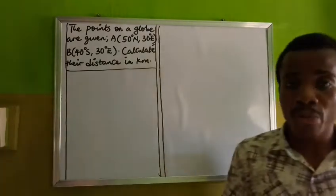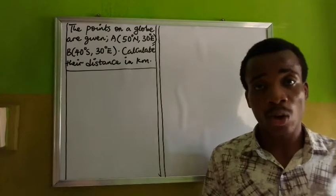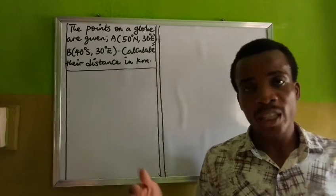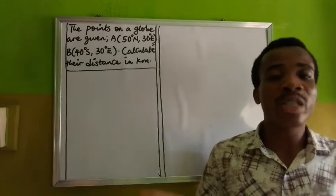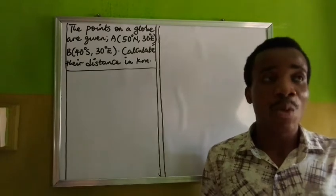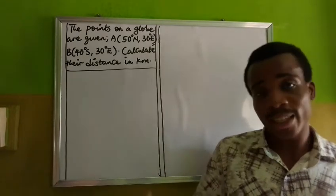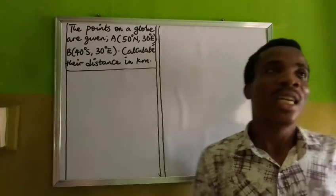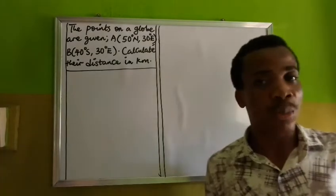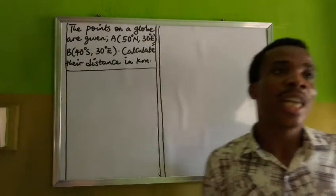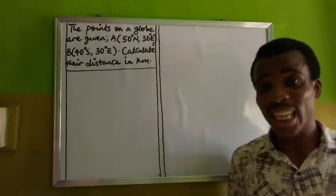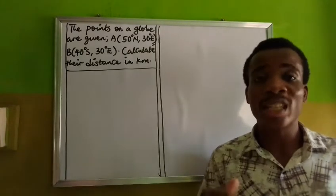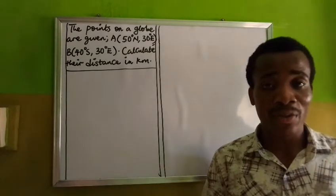There is a way we figure that out by first locating the points on the globe. If the points involve the great circle, it has its own separate formula for calculating distance. And we have another formula for calculating distance on the small circle. Now, if the points lie on the same longitude, it implies that we are dealing with a great circle. But if they lie on the same latitude, it implies that we are dealing with a small circle.